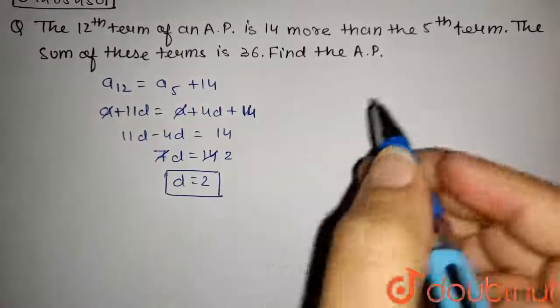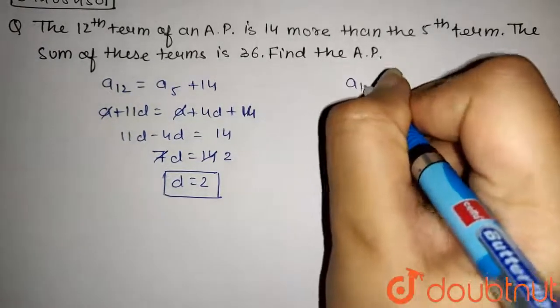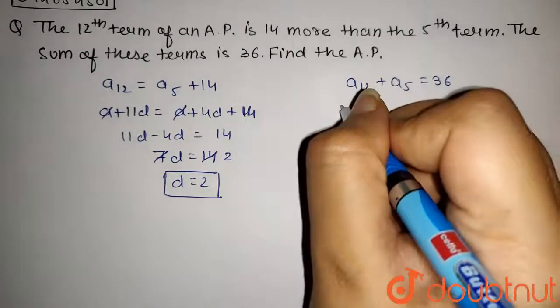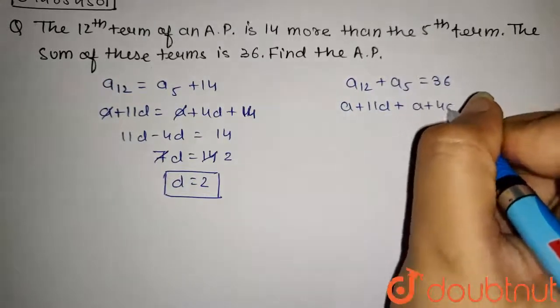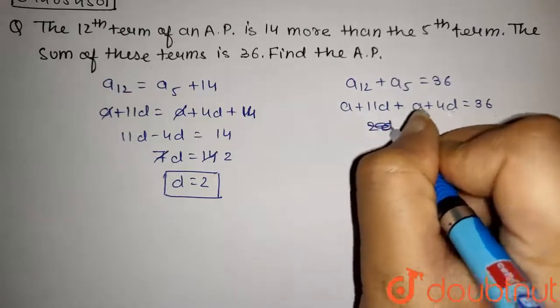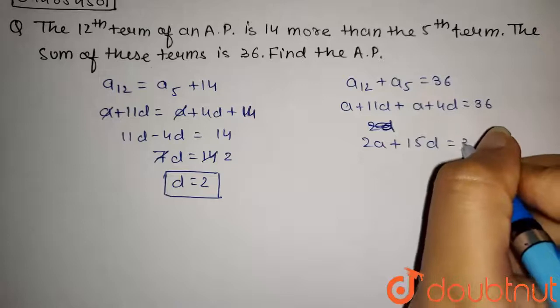And also, we have given that the sum of these terms is 36. So we have A12 plus A5 equals 36. That is, A plus 11D plus A plus 4D equals 36. Now, this will be 2A plus 15D equals 36.